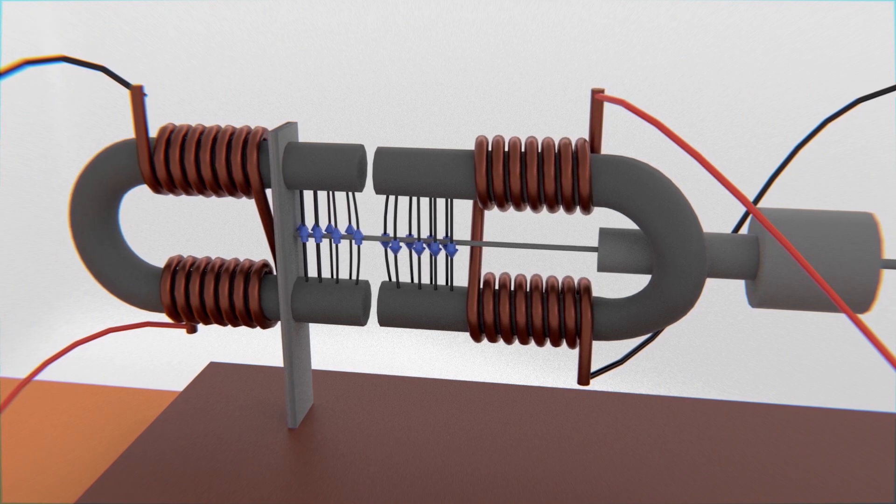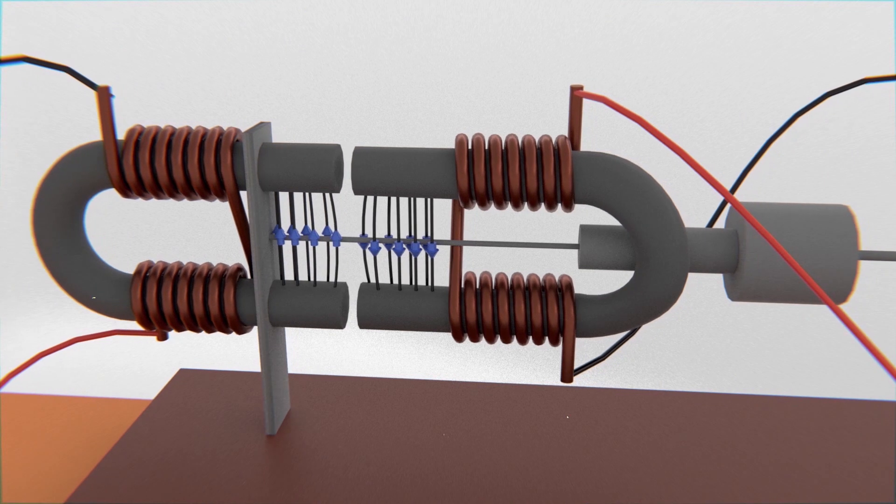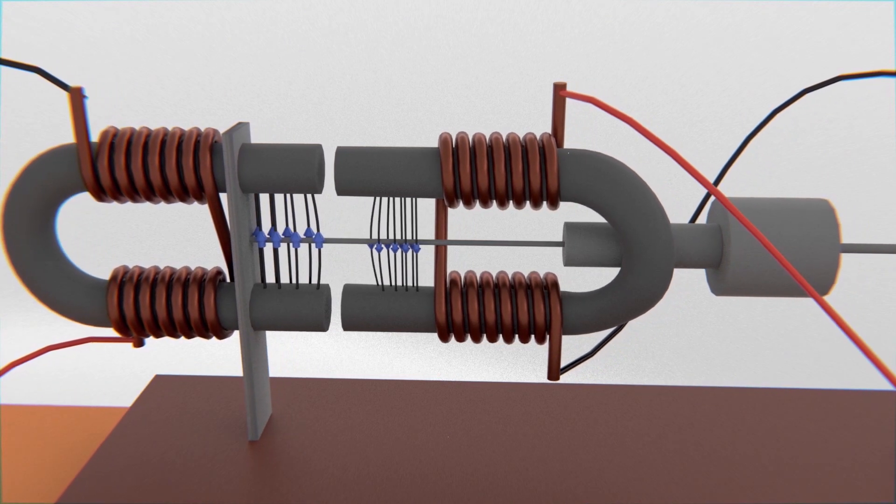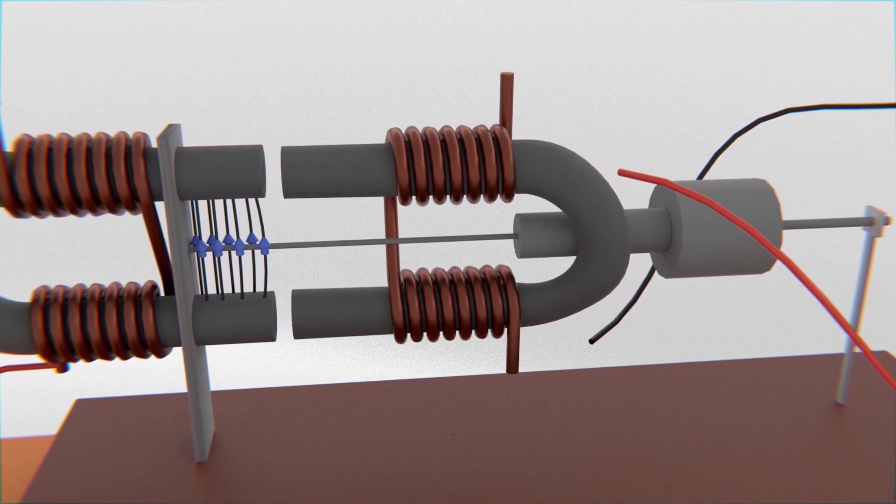The only problem with this is that if you want the engine to keep spinning, you would have to change the connection of the cables for every half turn that the shaft does, and unfortunately, at some point the cable will be tangled on the shaft, blocking its movement.